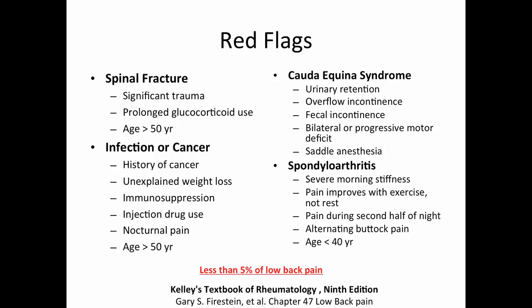Spondyloarthropathies such as HLA-B27 and ankylosing spondylitis don't necessarily need urgent emergent treatment, but getting rheumatologic treatment with disease-modifying agents can be valuable. Even though they're less common, you want to make sure to rule out bad infections, cancers, or neurologic deficits.